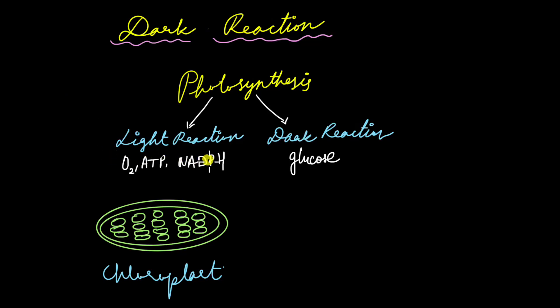In a previous video we talked about the light reaction which took place in the presence of sunlight and using the energy from sunlight in the chloroplast, plants were able to produce ATP and NADPH and release oxygen as the byproduct.